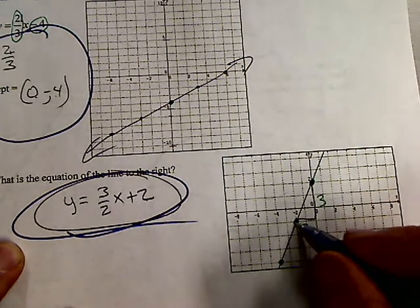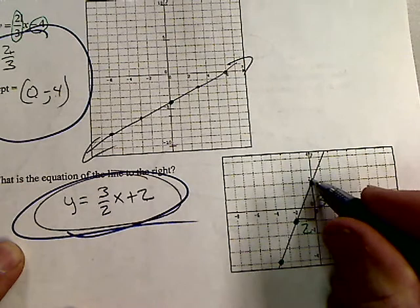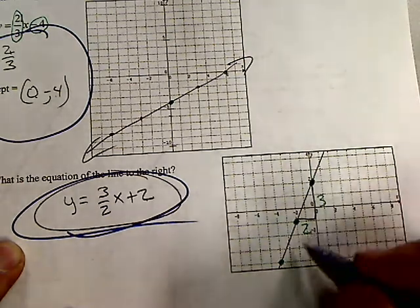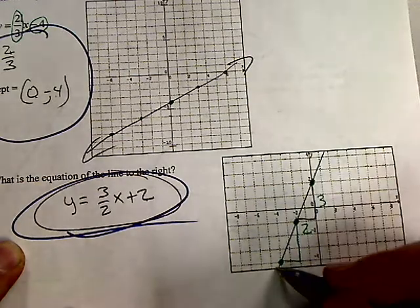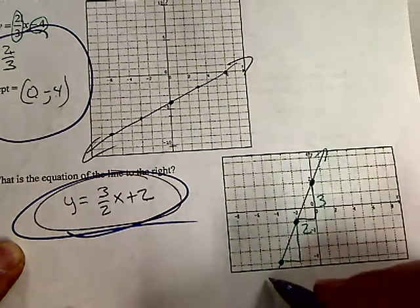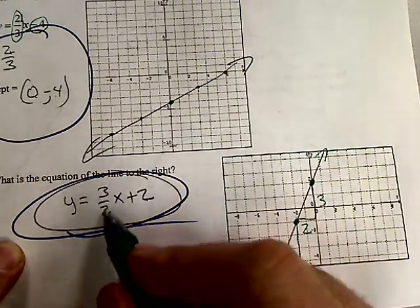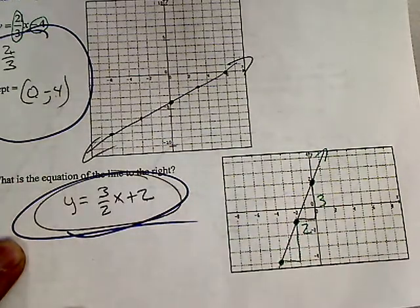I could go from these two points. I could even go to those two points. I just have to reduce it. So it goes up 3 over 2. It's positive since it's going uphill from left to right. It's a positive 3/2 x, and there's my equation.